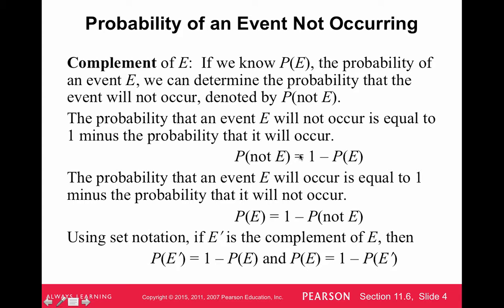So for instance, if we know that the probability that it will rain on a particular day is 30%, then the probability that it will not rain will be 100 minus 30, 70%. If I know that the probability of an event is one-fifth, the probability that the event will not occur is 1 minus one-fifth, which is four-fifths.